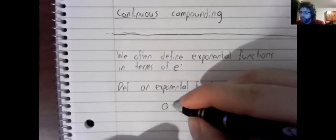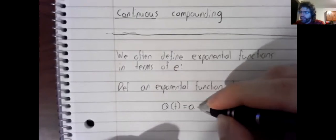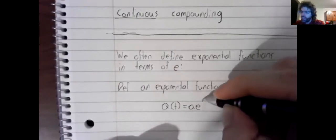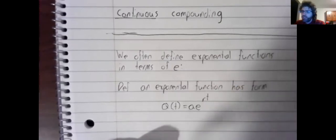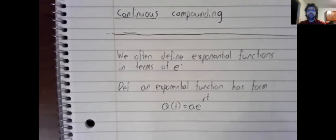An exponential function has the form Q of T equals A times E to the power of RT. And again, this is hard to properly motivate without references to calculus, but we'll talk about it a little in our next set of notes.